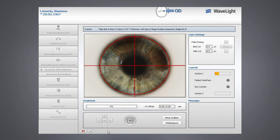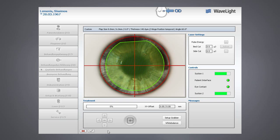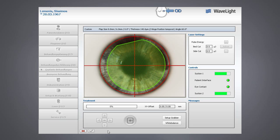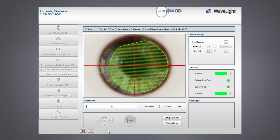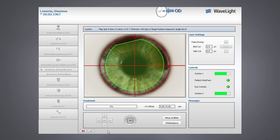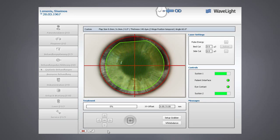The Wavelight FS200 femtosecond laser offers the physician the unmatched ability to adjust the placement of the flap even after the suction ring has been applied. By shifting the placement grid before the flap is created, the physician may customize flap placement to best fit the ablation profile of their patient.